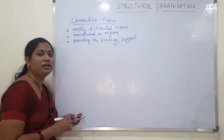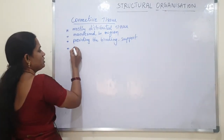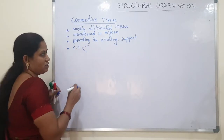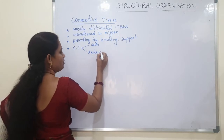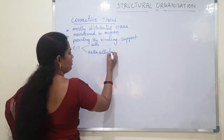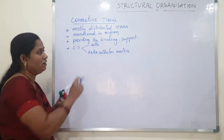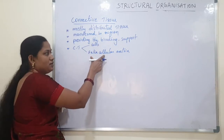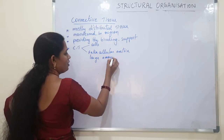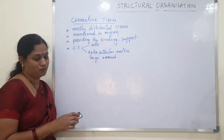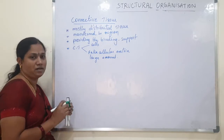Connective tissue gives support and binding to all tissues. In connective tissue, there are mainly two parts present: cells and extracellular matrix. Different types of cells are present, and at the same time a large amount of extracellular matrix is also present.